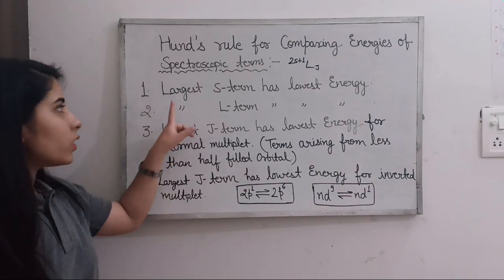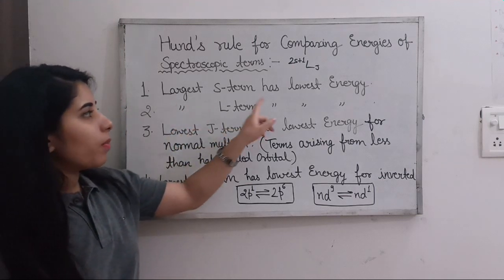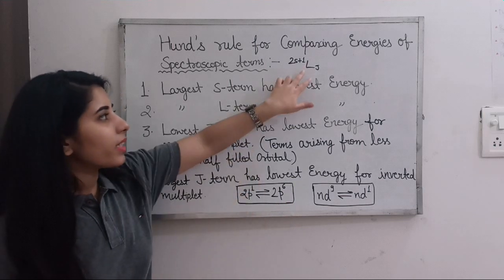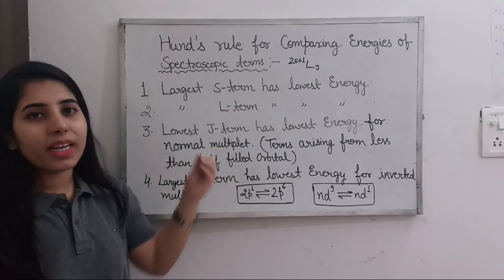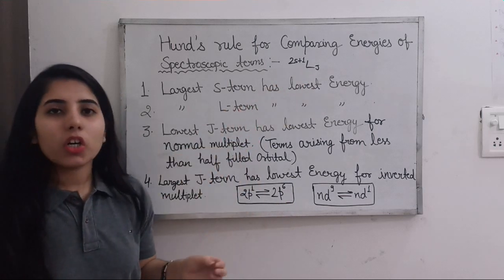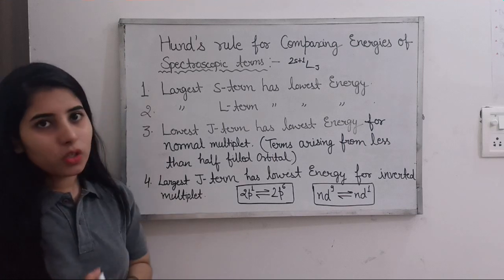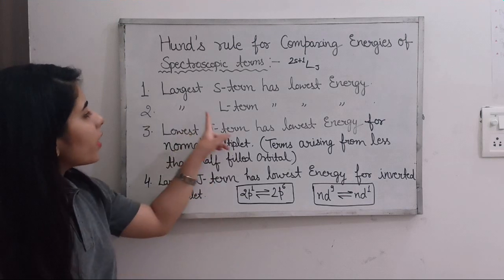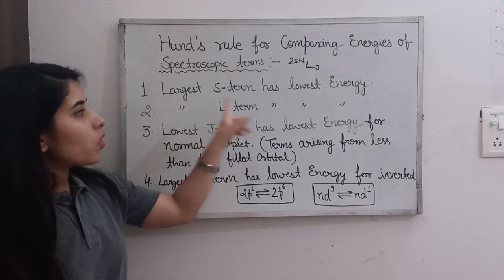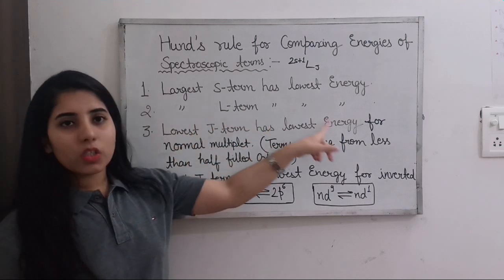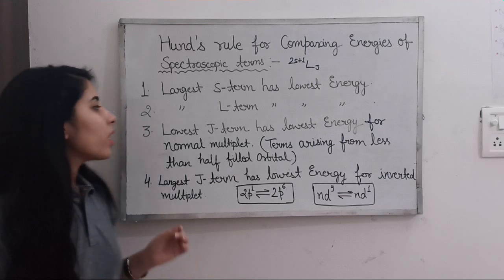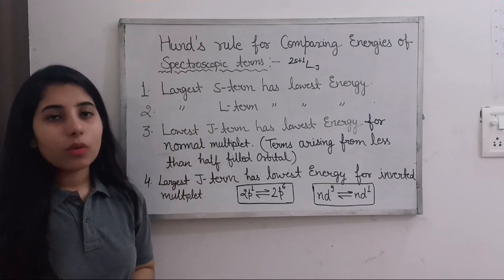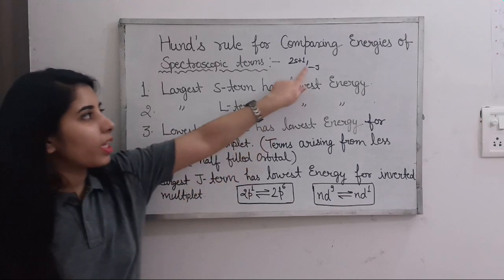The second rule is: the largest L term has the lowest energy. Here L refers to the orbital angular momentum quantum number in the spectroscopic term notation. So if the L value is the largest among the given terms, the corresponding energy will be the lowest.